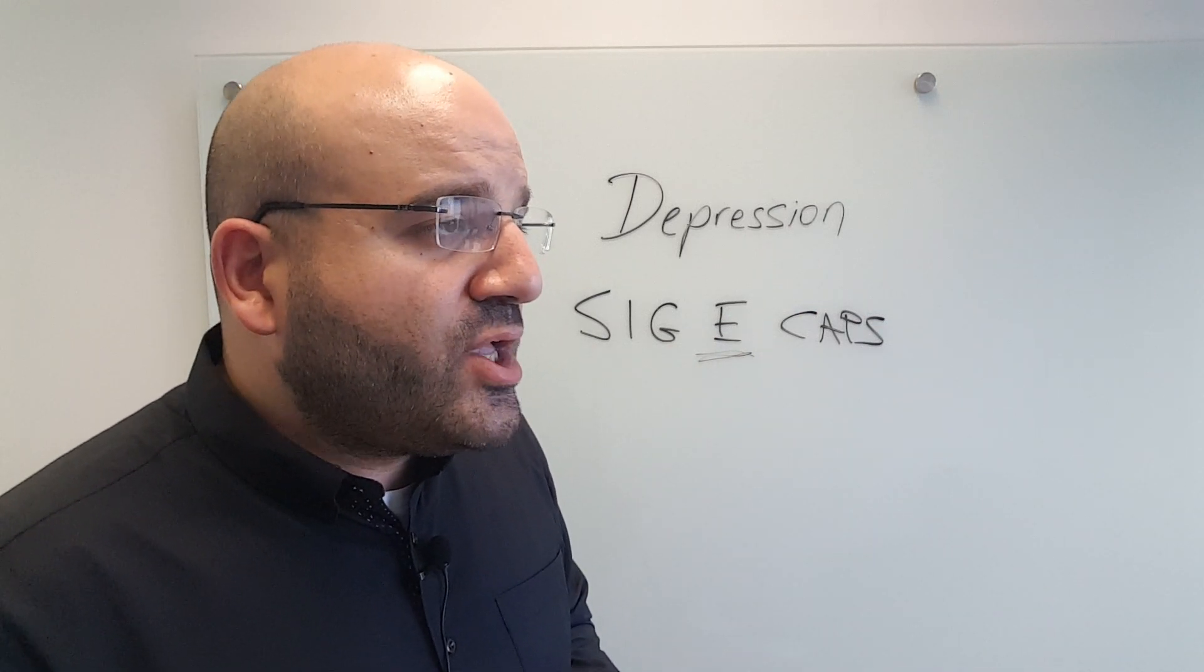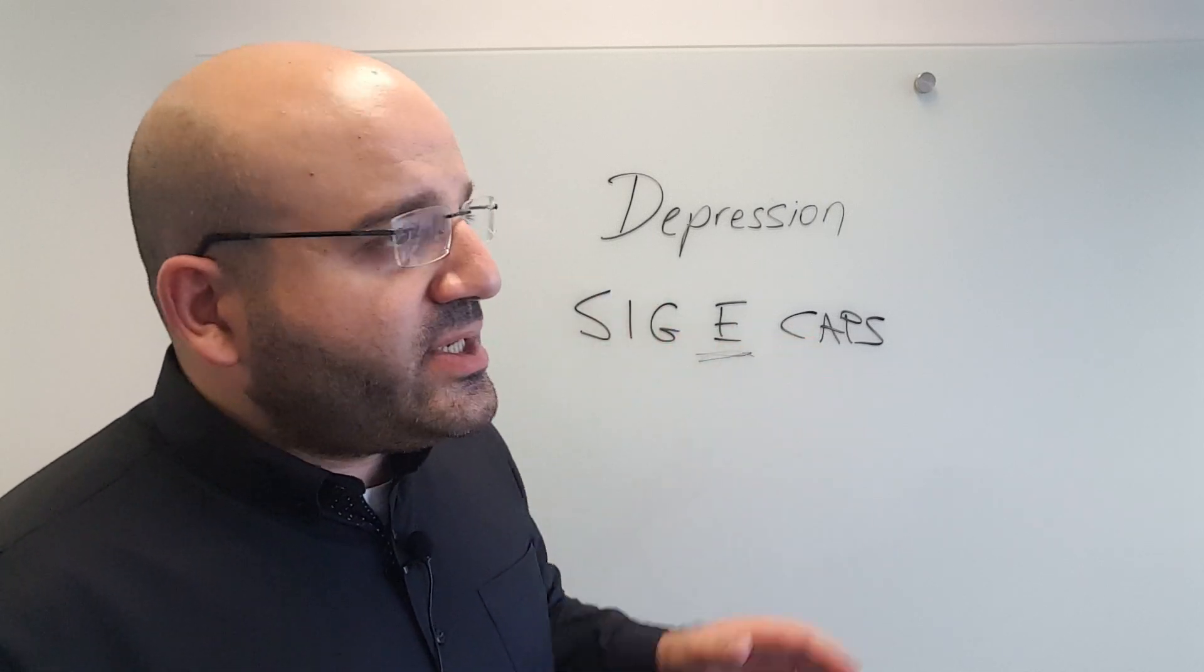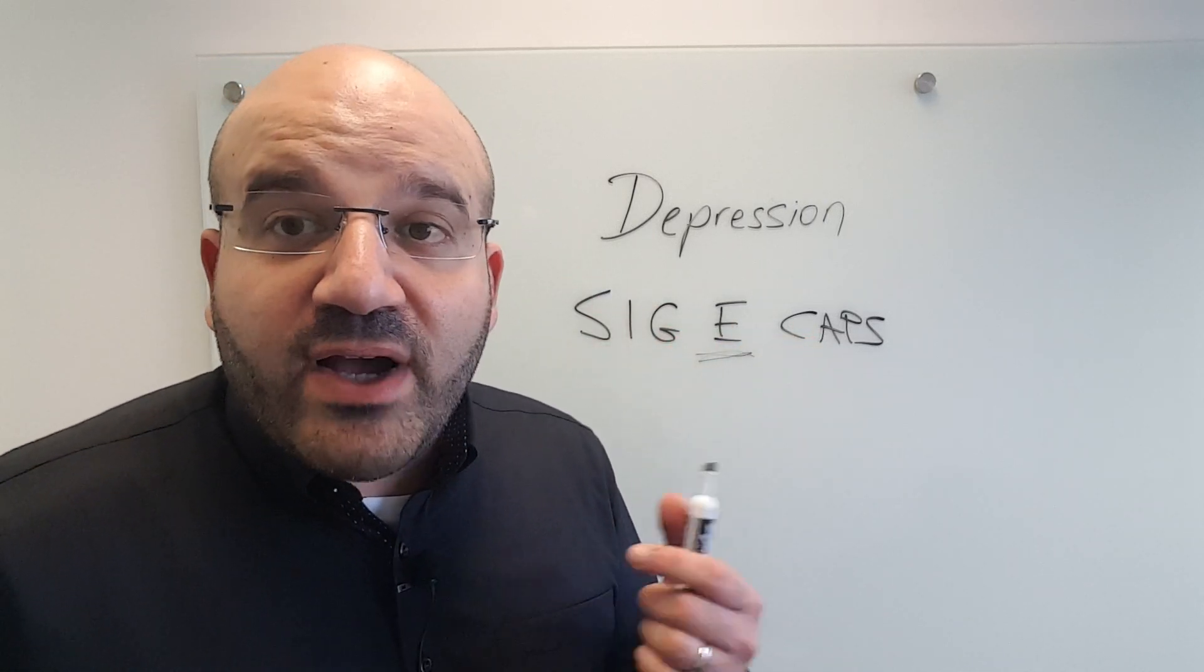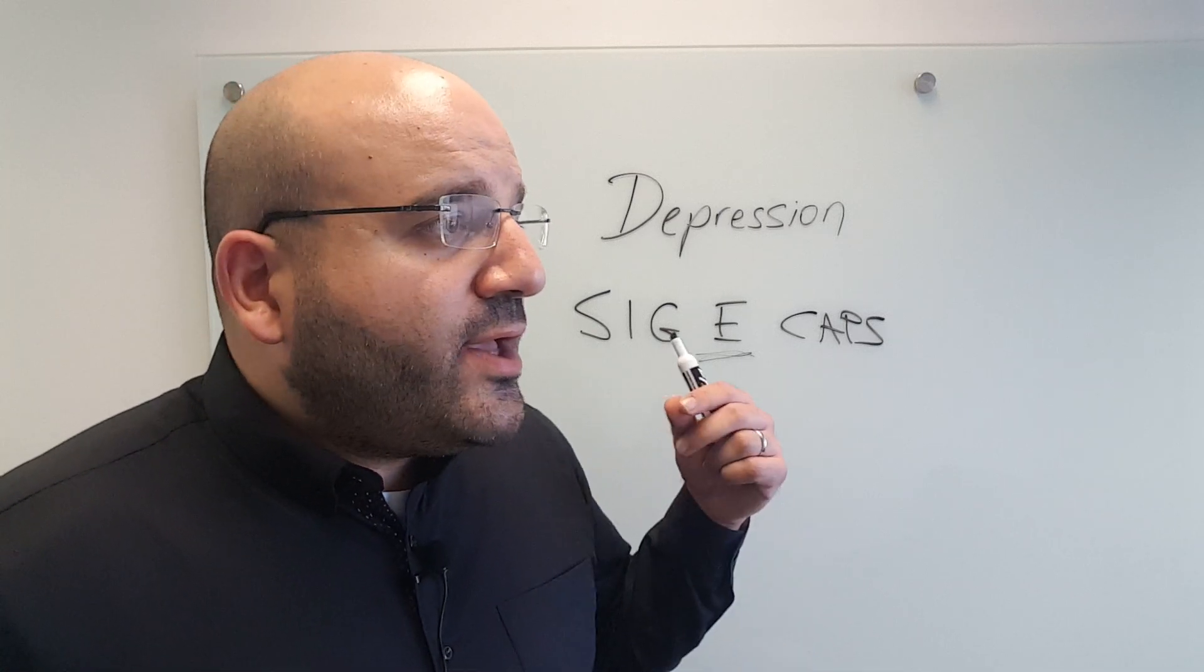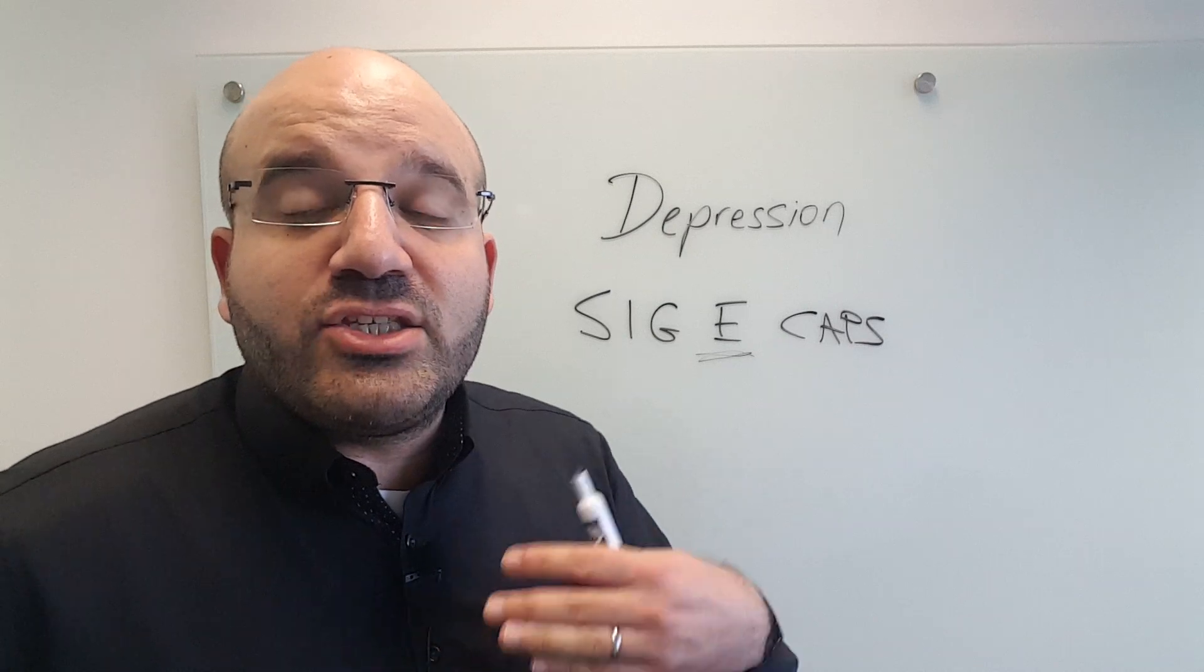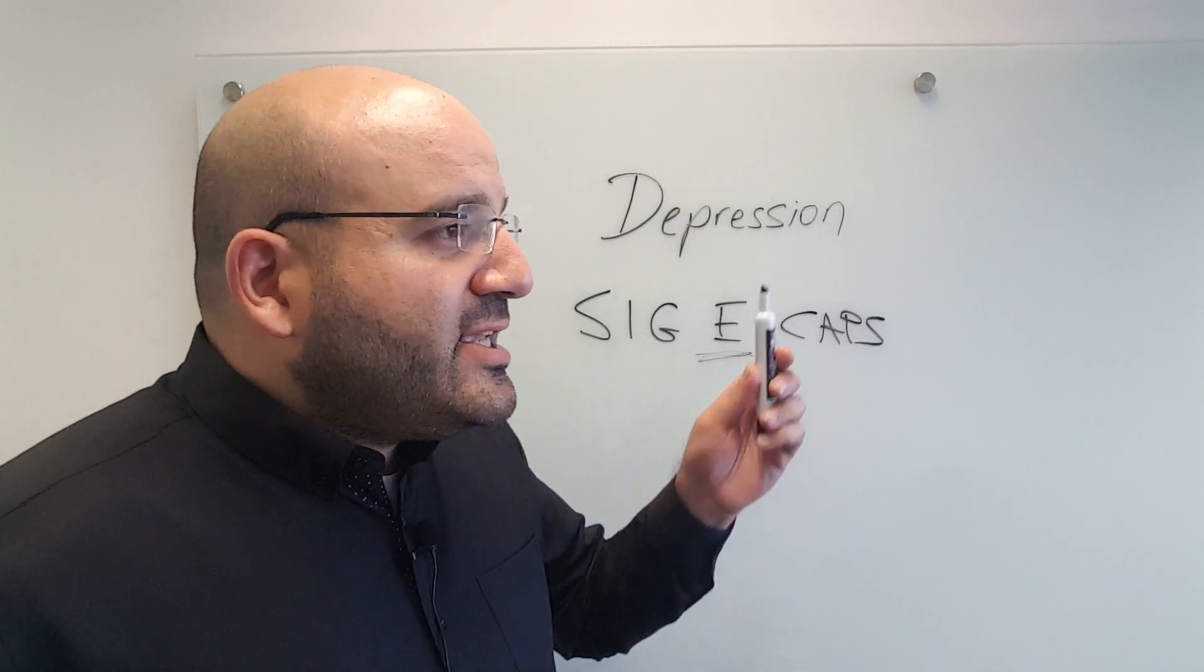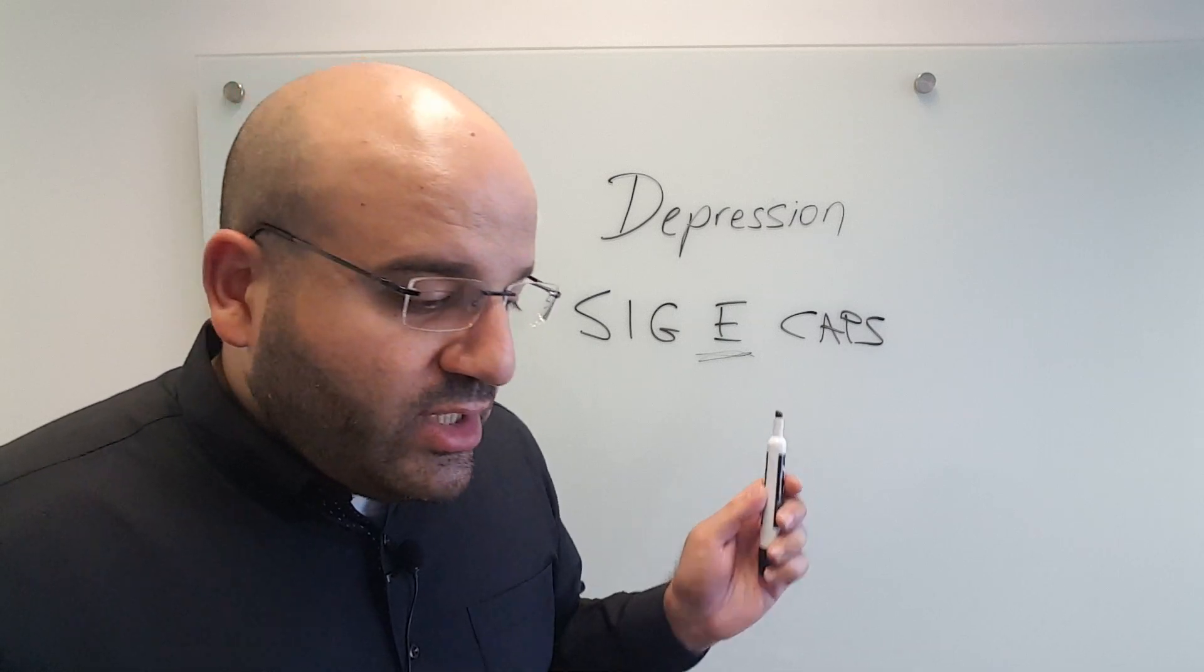So that basically captures depression as a syndrome. Most diagnostic systems require that the person experience at least five of these in the DSM in order for the diagnosis of depression to be made. So it has to be continuous, unrelenting. In a nutshell, these are the symptoms we're looking for.